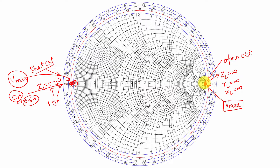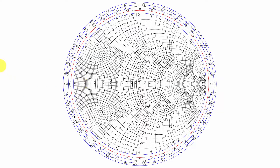Now we will take one example. Using that, we will find the distance of voltage maxima and voltage minima from the given load. Let us consider a load impedance of 35 plus j50 ohm and a line impedance of 100 ohm.